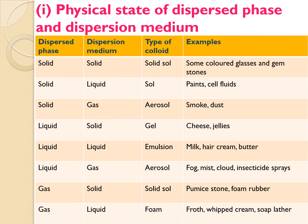Pumice stone and foam rubber are known as solid sol, where dispersed phase is gas and dispersion medium is solid. Colored glasses are also known as solid sol, but here both dispersed phase and dispersion medium are solid. The last type is foam, which we encounter as froth, whipped cream, and soap lather in daily life — here dispersed phase is gas and dispersion medium is liquid.